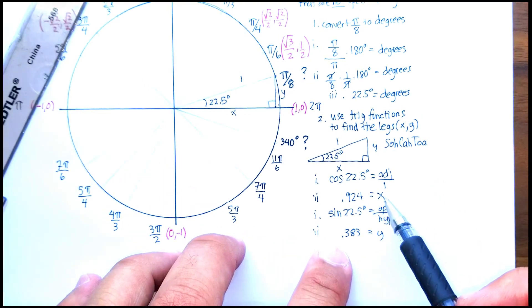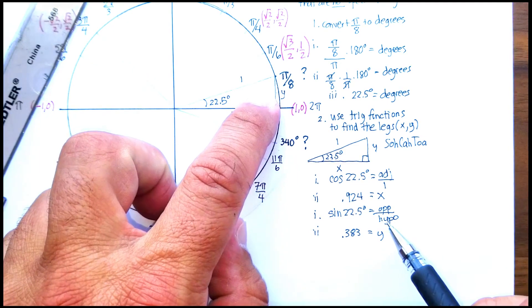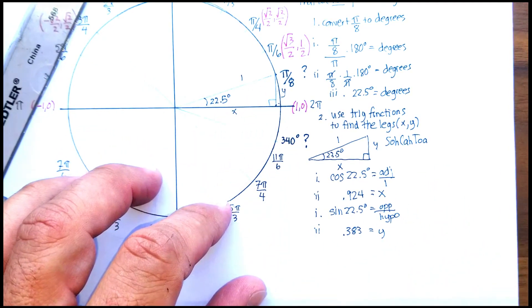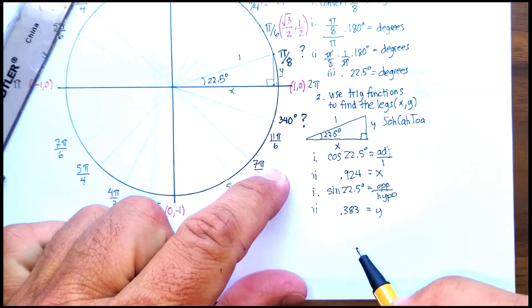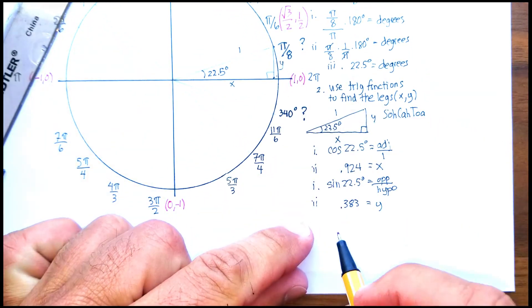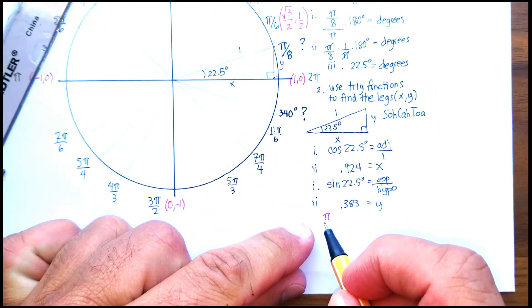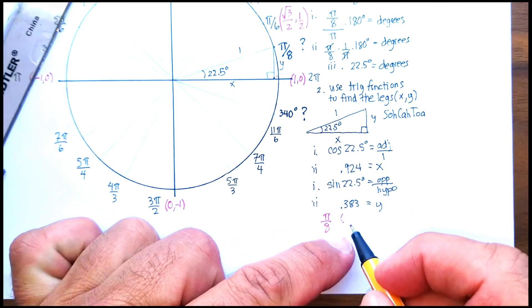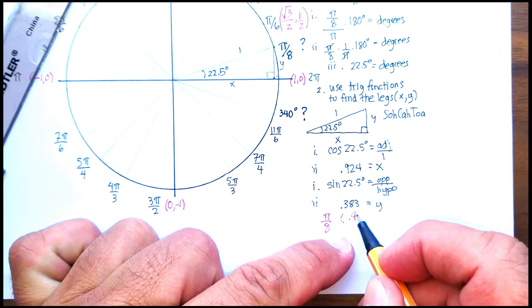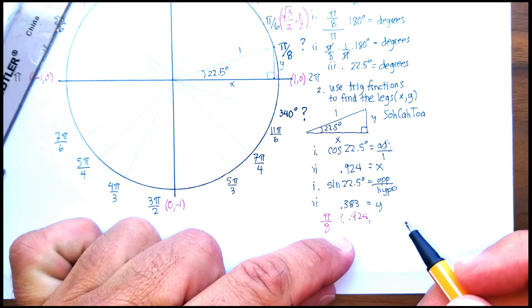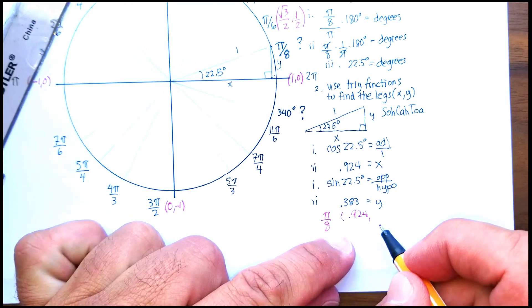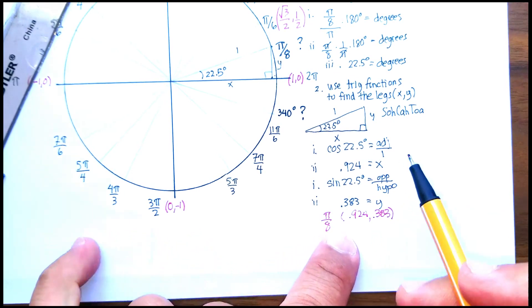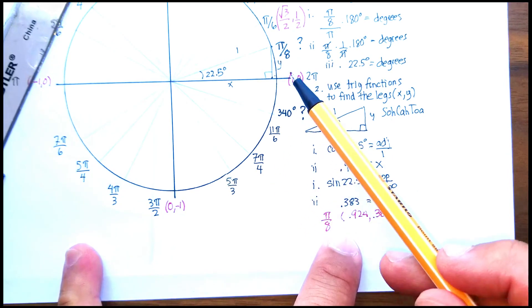We now have our x and our y, and since we're in the first quadrant, both the x and the y are positive. So we will go up here and we will say that at π/8, the coordinates will be 0.924 and the y value is 0.383.